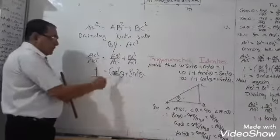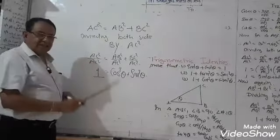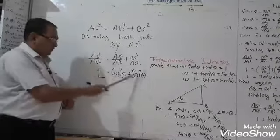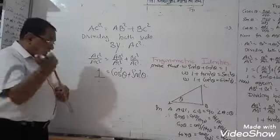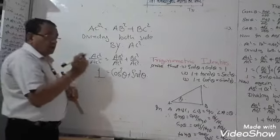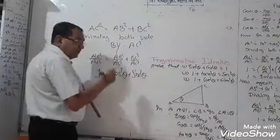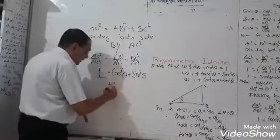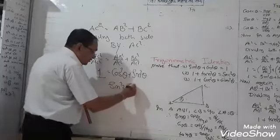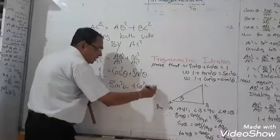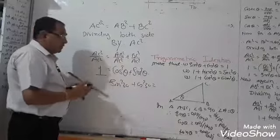Sin²θ plus cos²θ is equal to 1. In numerical examples, we have proved that sin²30° plus cos²30° is equal to 1.